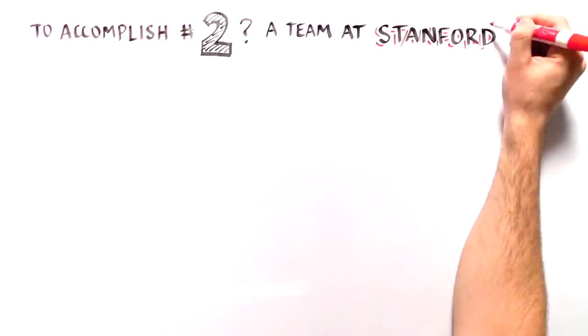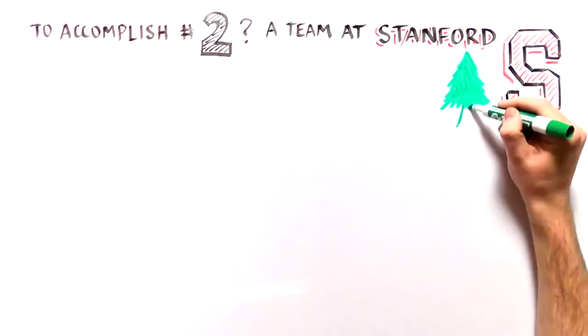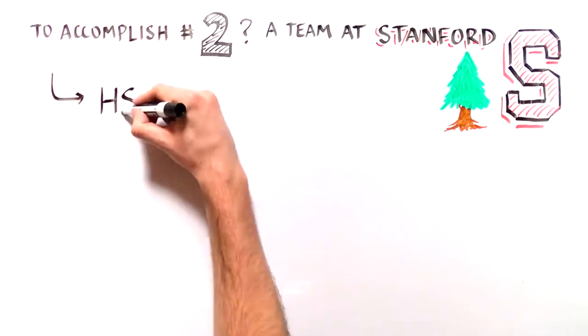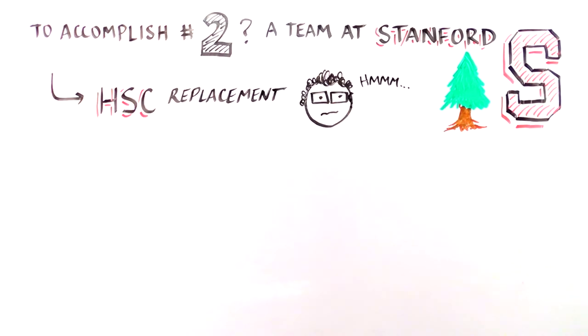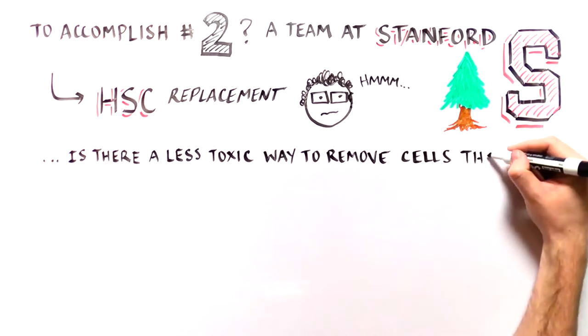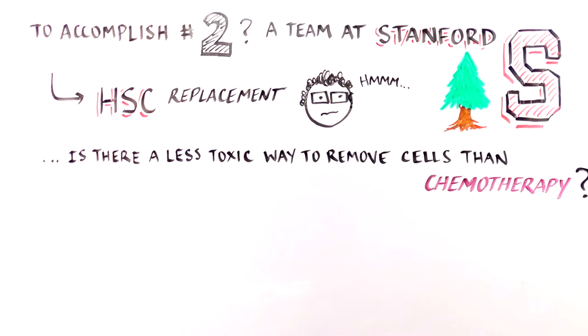Another team of researchers at Stanford have developed a complementary approach which we'll call HSC replacement. In order to allow the repaired HSCs to work, the defective HSCs must first be removed. As we mentioned, currently SCID children receive chemotherapy to remove the defective HSC. However, chemotherapy is toxic.